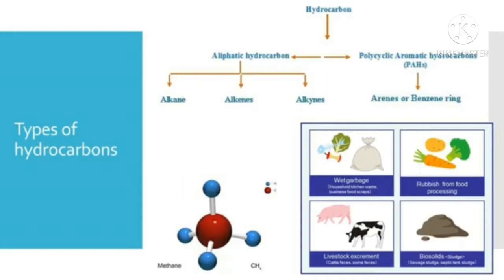Dead and decaying plants and animals release methane gas. It is a renewable source of energy. Sewage sludge can also be decomposed by microorganisms to produce methane gas along with impurities like carbon dioxide and hydrogen sulfide. After removing these impurities, methane gas can be used as an efficient fuel.